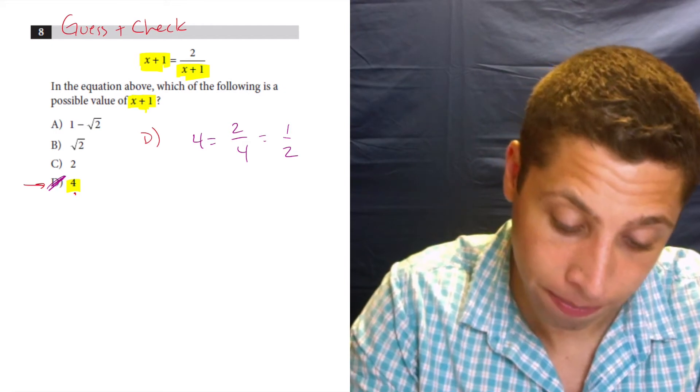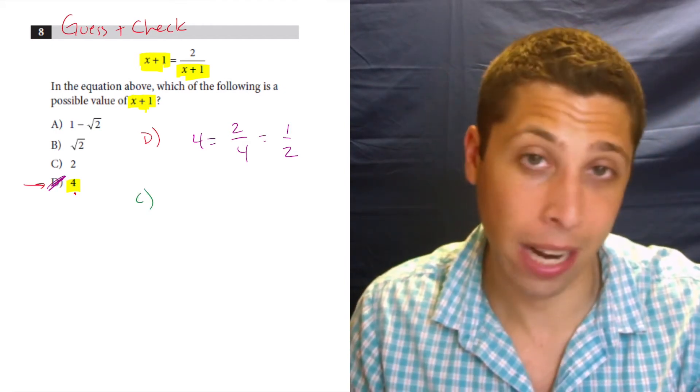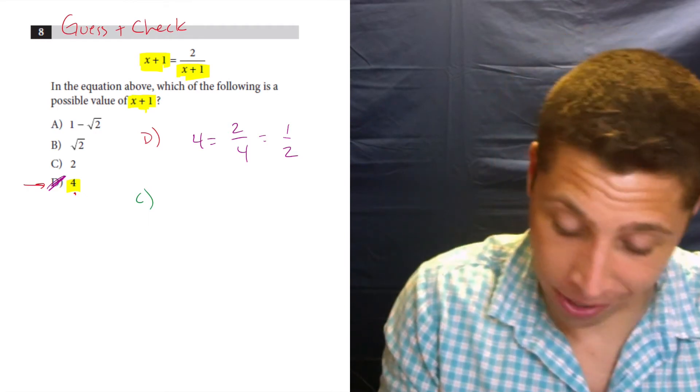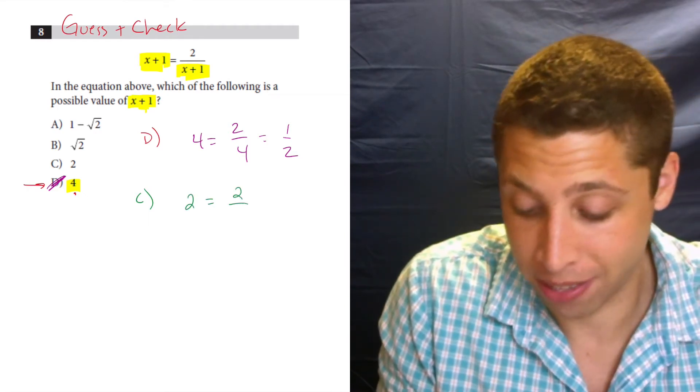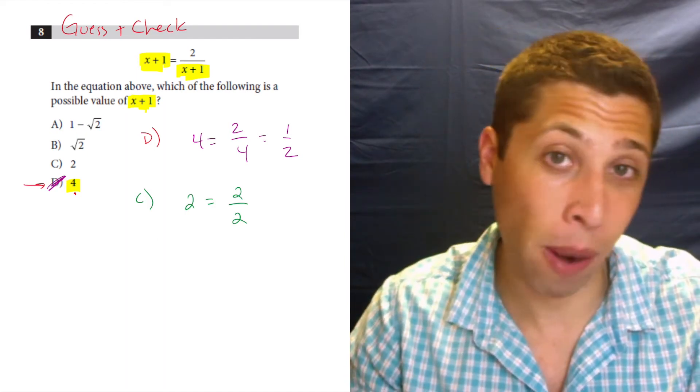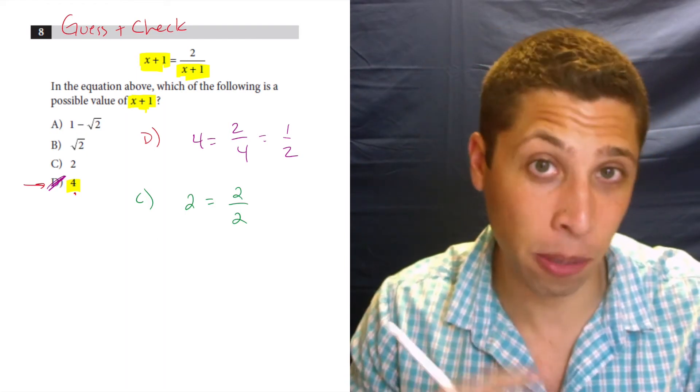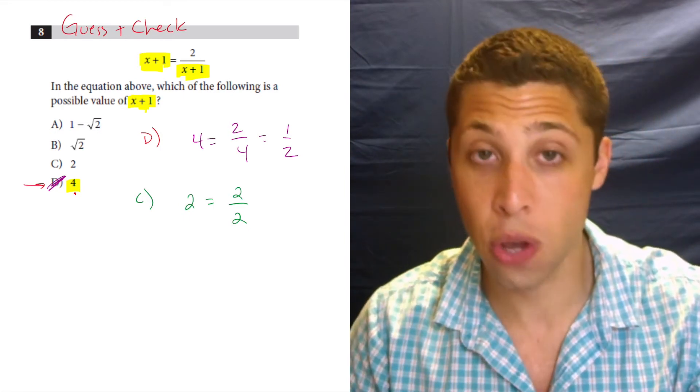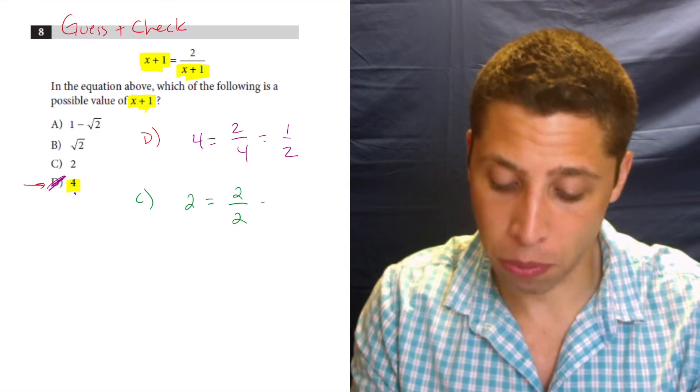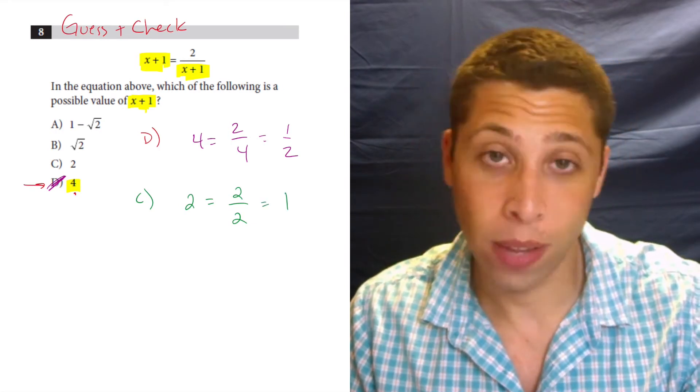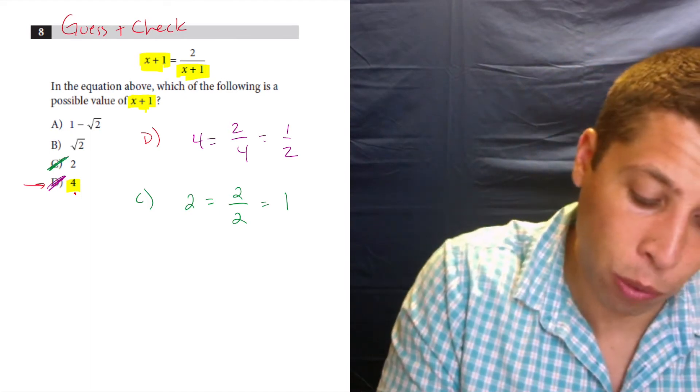Next. I do C. Again, I'm lazy. I'm going to do the choices that make the most sense to me. And so this one is the next best. So in this case, again, I'm plugging in, I'm guessing and checking, but I'm not substituting in for X. I'm substituting in for X plus one because that's what the answer choices mean. So two is equal to two over two. Well, two over two simplifies to one. So no, that's not true either. Two is not equal to one. Those are different numbers.